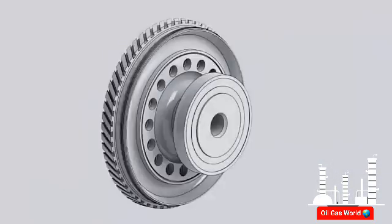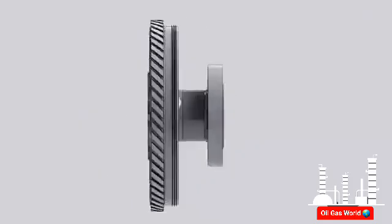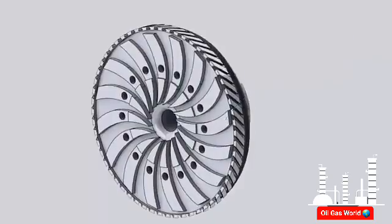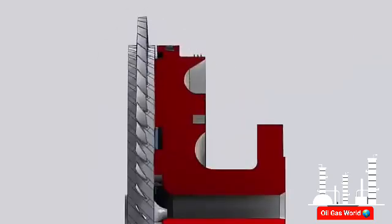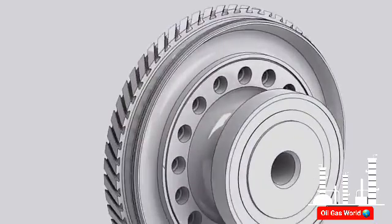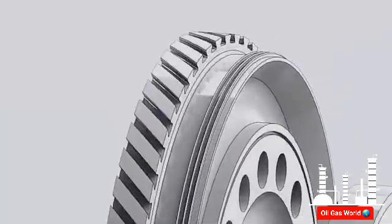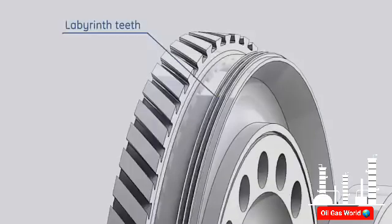The aft stub shaft is machined to provide the following features: a fan machined on the forward side of the stub shaft, which draws air through the gap between the 16th wheel and the aft stub shaft to cool the turbine rotor parts; an aft balancing groove; an aft flange to connect the compressor rotor to the turbine rotor; and labyrinth teeth to mate with compressor stator parts, preventing compressor discharge air from escaping inside the inner barrel around bearing number two.